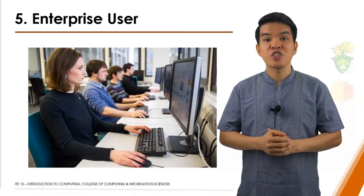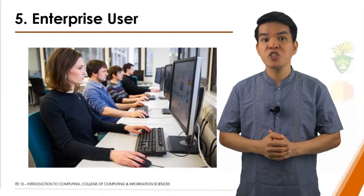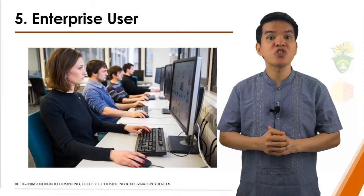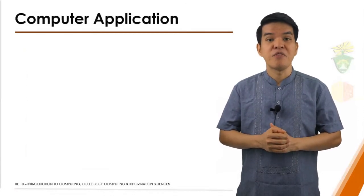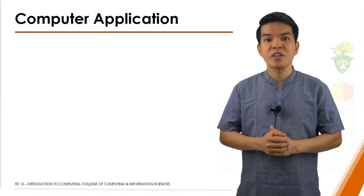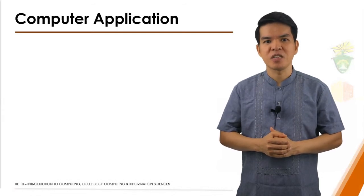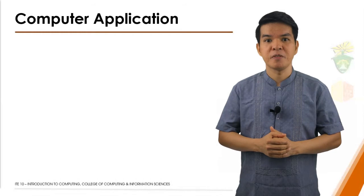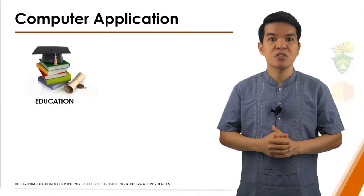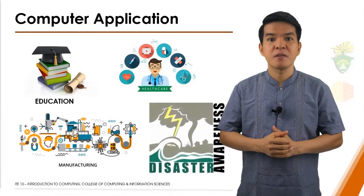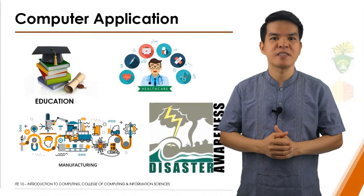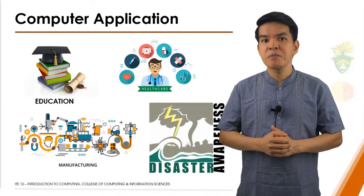The computer has changed our society today as much as the Industrial Revolution changed society in the 18th and 19th centuries. Various aspects of our society have made work easier through the use of computers and the advancement of technology. People interact directly with computers in fields such as education, healthcare services, manufacturing, and even in the government's action in disaster preparedness and response. Besides, they can reap the benefits of breakthroughs and advances in these fields.